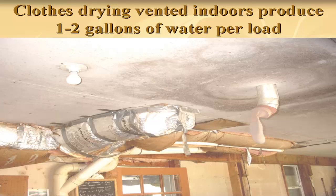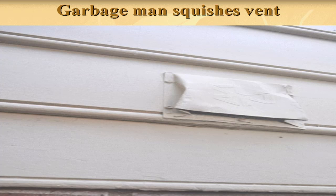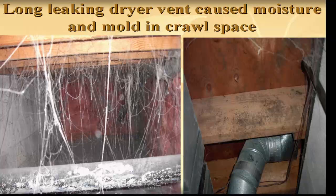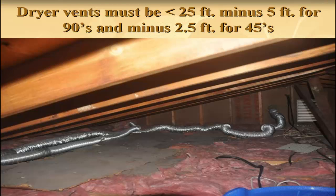In one case the garbage truck squished the dryer vent and it blew apart in the crawl space, filling it with lint — an indoor air particulate quality problem, plus mold in the cold vented crawl space with nobody checking it. Sometimes dryer vents are moved to the center of the house on the second floor with 50-foot lines — those won't work, get plugged up, and it'll take an hour to dry your jeans. Your dryer vent should not be more than 25 feet long, subtracting 5 feet for every 90-degree bend and 2.5 feet for every 45-degree bend. Stay in that range for a good dryer vent.